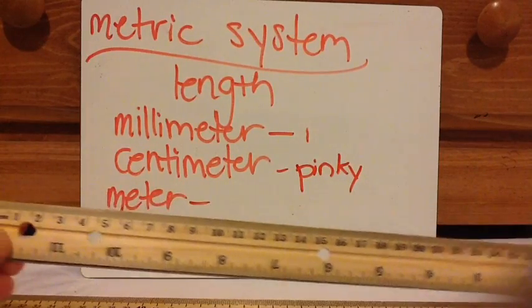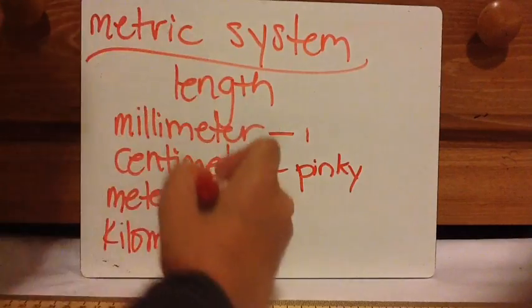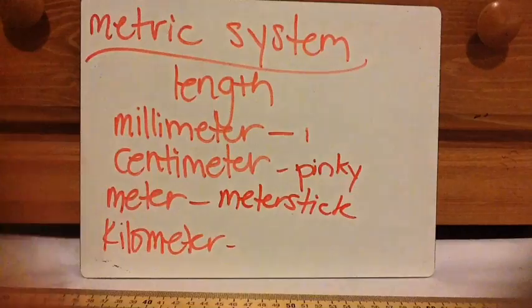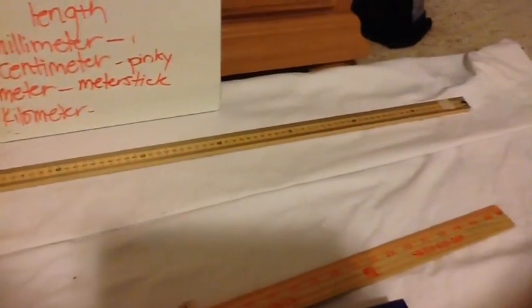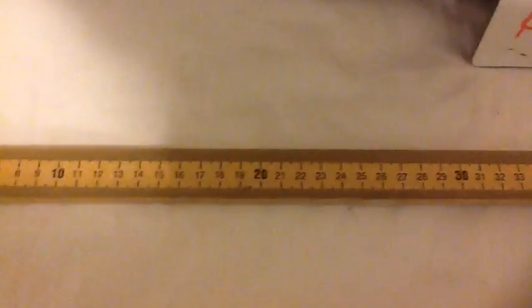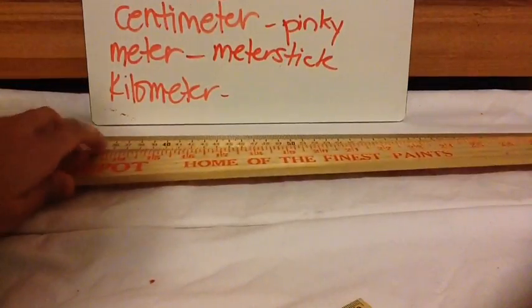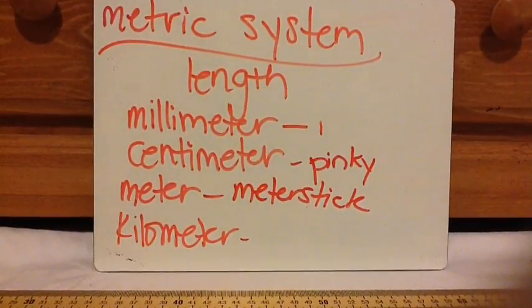A hundred centimeters equals a meter, so I'm going to show you a meter stick. A meter stick is a little bit longer than a yardstick. Here's the meter stick. You can see this is zero centimeters, that's one, that's two — and the 10, 20, 30 markings are a bit bigger because those are the decimeters. And at the end, that's 100. I want to show you a yardstick so you can quickly compare — they are very, very close to each other.